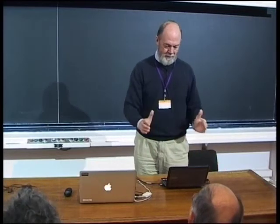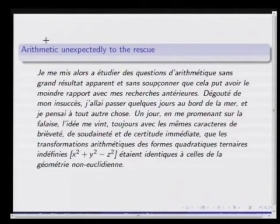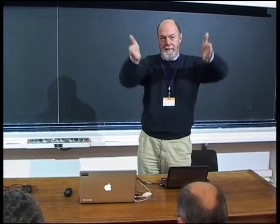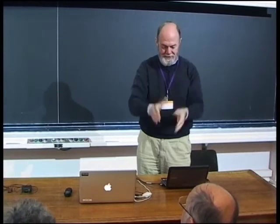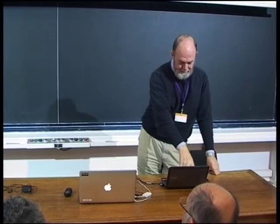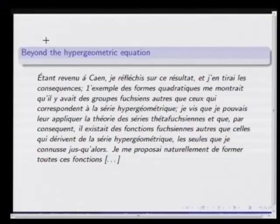He still can only do three singular points, and there are differential equations with four, five, or any number of singular points. He's stuck, goes for a walk, and realizes that what he's been studying in number theory à la Hermite is just the kind of transformations he needs. This connects to the non-Euclidean geometry model you get as the disk as one half of the hyperboloid of two sheets — the group is SO(2,1) — and this enables him to study differential equations with any number of singular points, going beyond the hypergeometric equation.